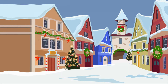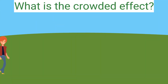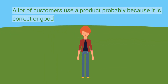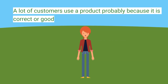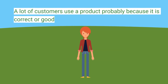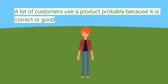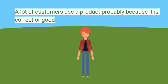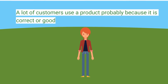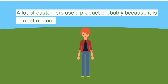In that scene I gave a popular example of the Crowded Effect: if a lot of customers say or use a product, it is probably because it is correct or good. The wisdom of the crowd — a lot of people stand in line at a restaurant because it is a good place to eat.